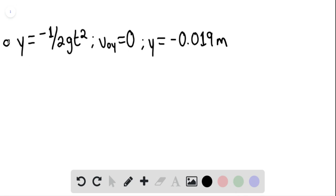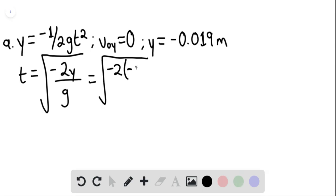we can say that t is equaling the square root of negative 2y over g. So this would be equaling the square root of negative 2 multiplied by negative 0.019 meters, and then this would be divided by 9.8 meters per second squared.